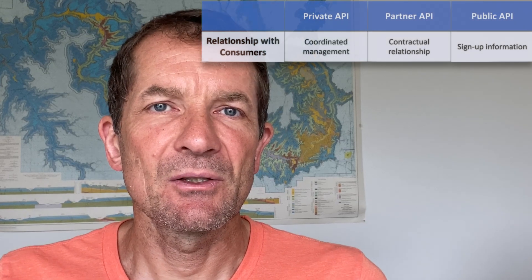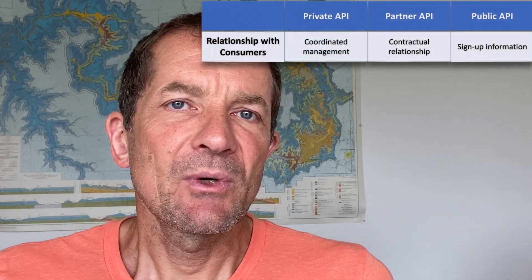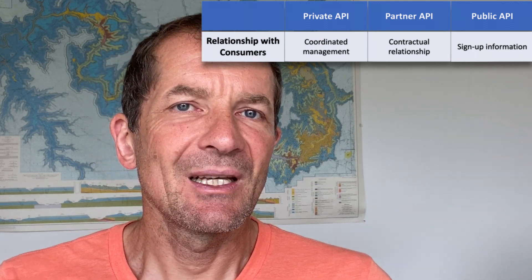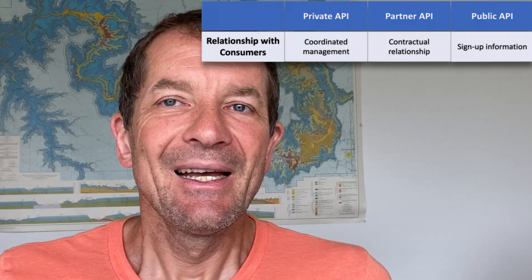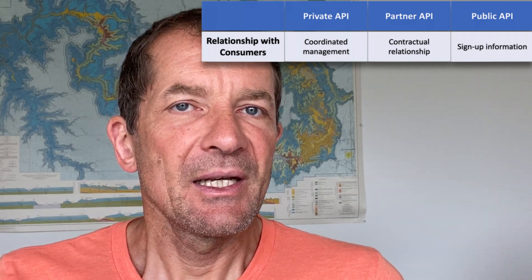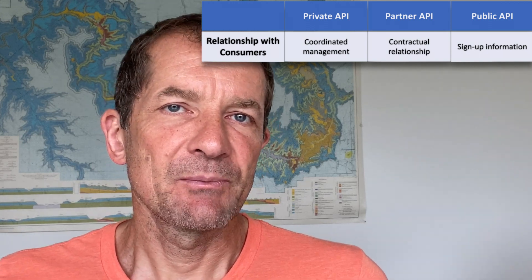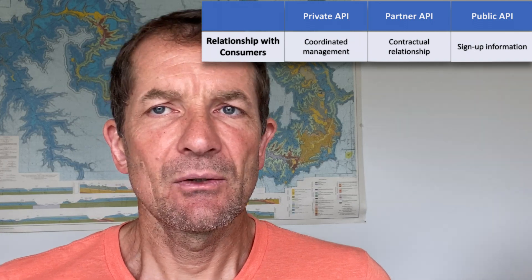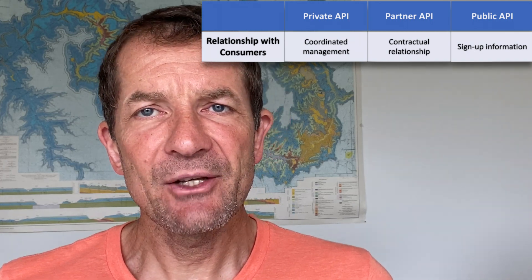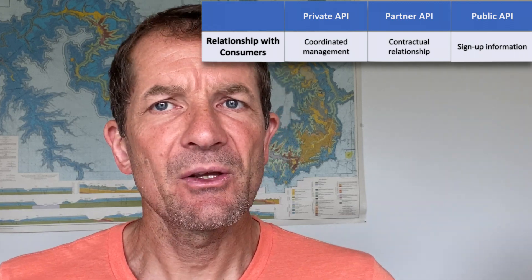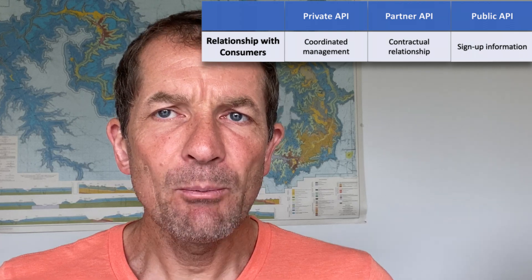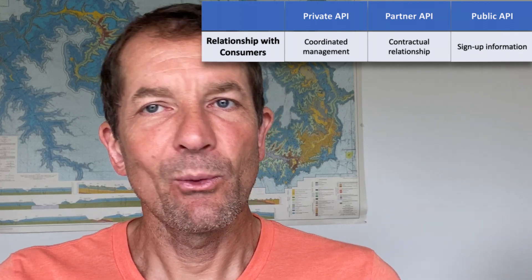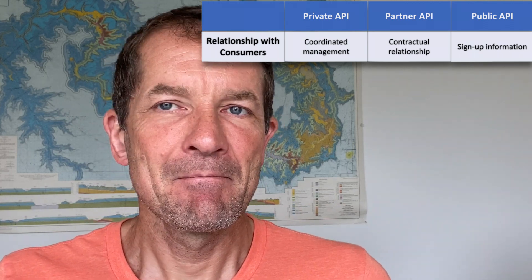That was the first one. The second design constraint is the relationship with the consumer. For private APIs, consumers and producers are in the same organization, so you can manage things much more easily — for example, when you want to change or decommission the API — because there is coordinated management of consumers and producers. For partner APIs it's already a little different; you probably have some kind of contractual framework or partner program, so you still have ways of coordinating with API consumers, but you already need to make things a little more controlled so that consumers don't get any nasty surprises.